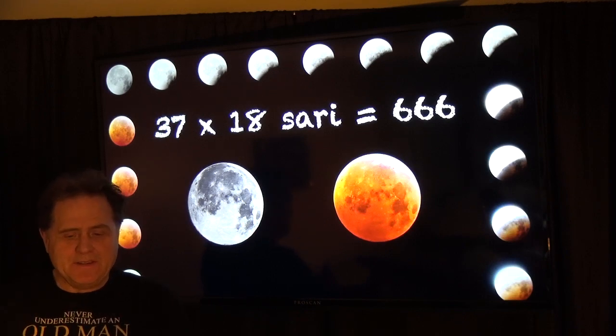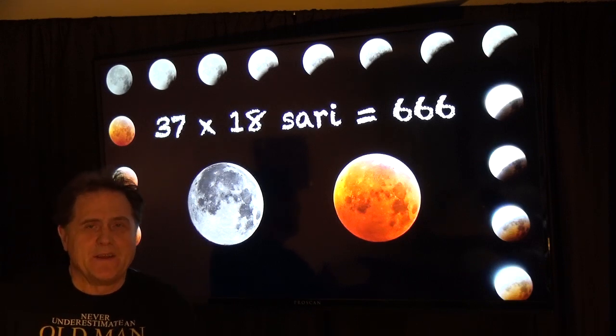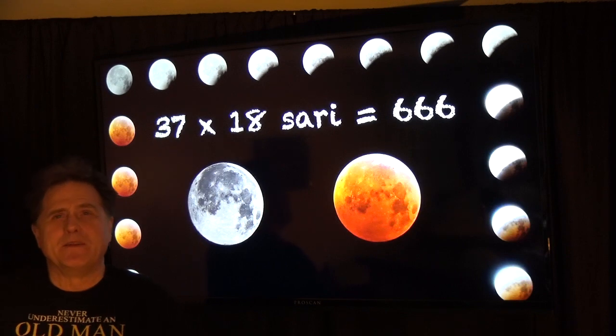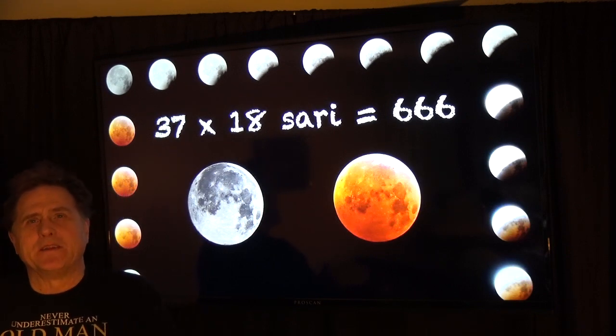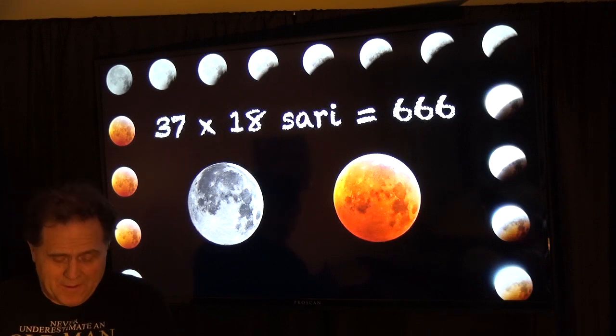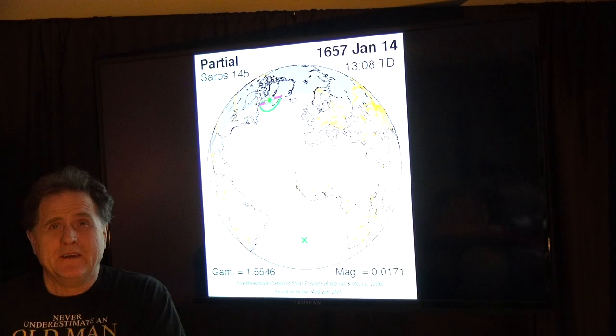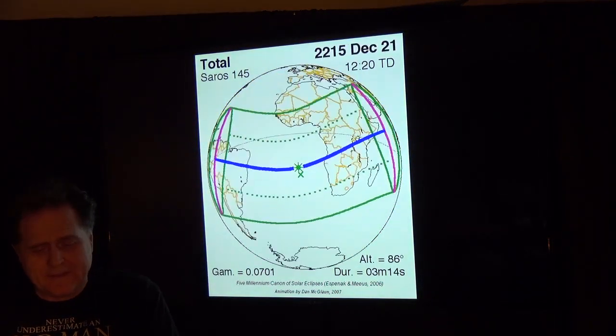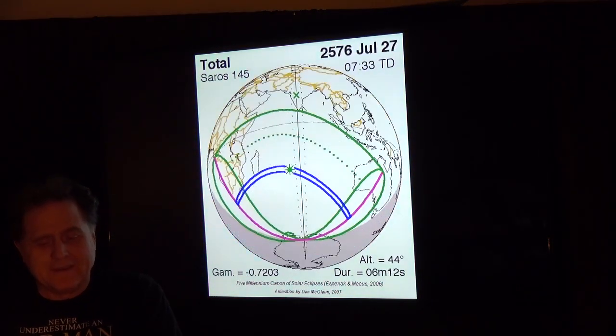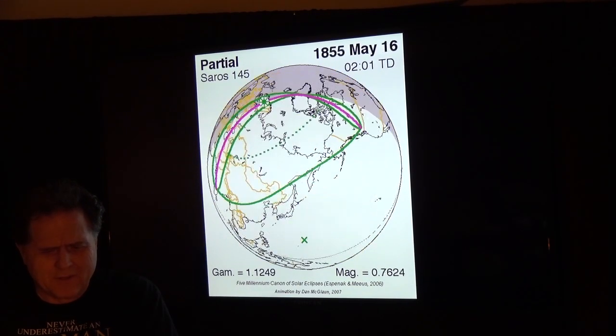Seven times 18, the Saros cycle, equals 666 as another number. We can play with the numbers all day long. When you're dealing with equations, you can get anything to reach 666. We're going to avoid what everybody else has been doing and cut right to the crux of the biscuit. This is the Saros cycle.